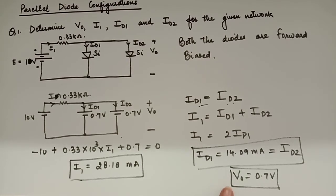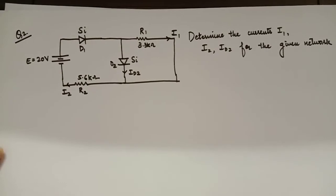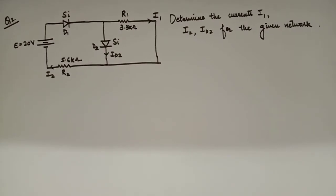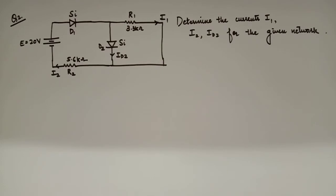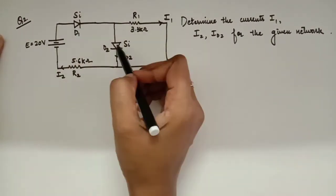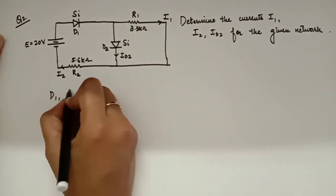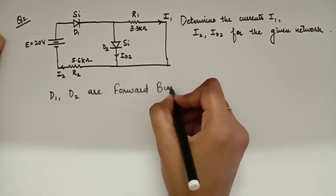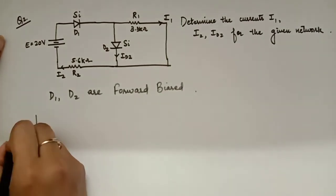Now, let's try to solve another numerical. First of all, we will see whether the diodes are forward or reverse biased. I can see this is D1 is forward and D2 is also forward. Then I will replace it with the equivalent circuits.